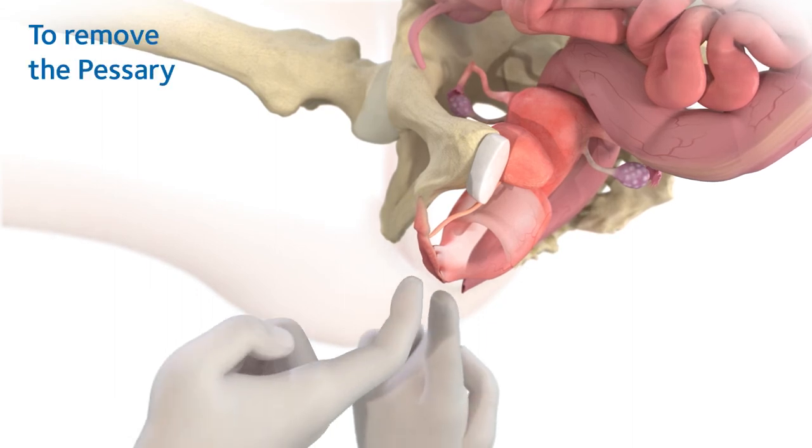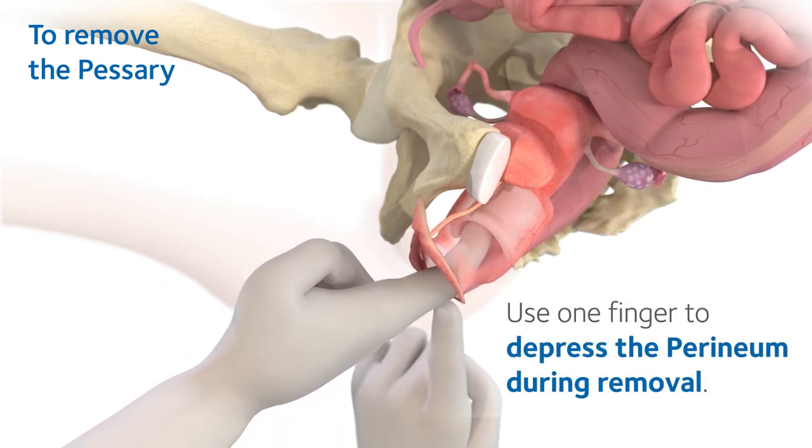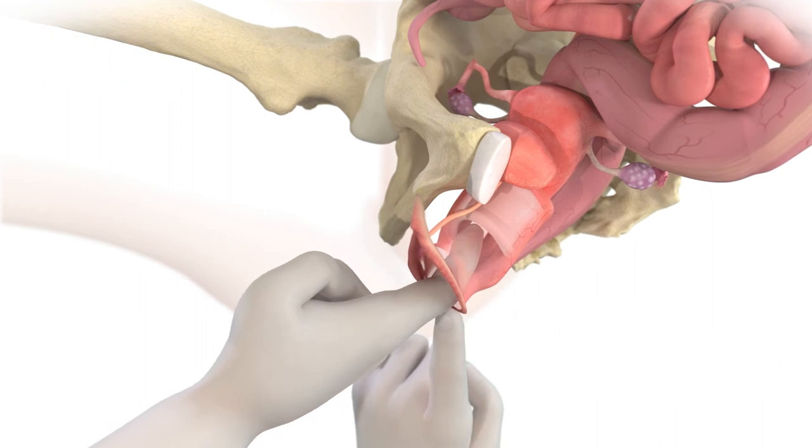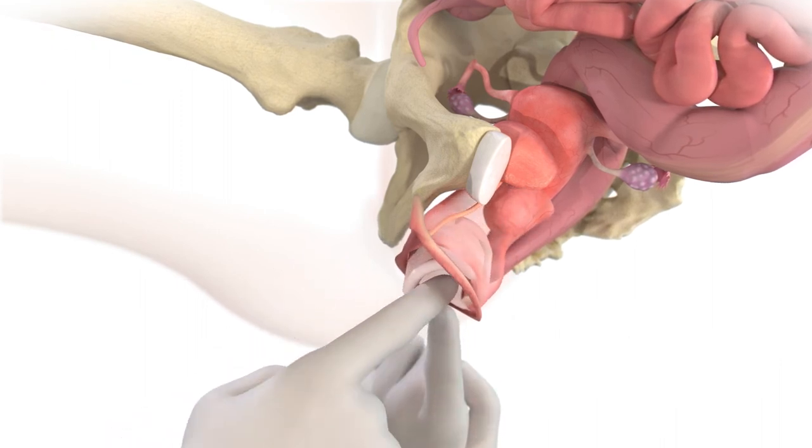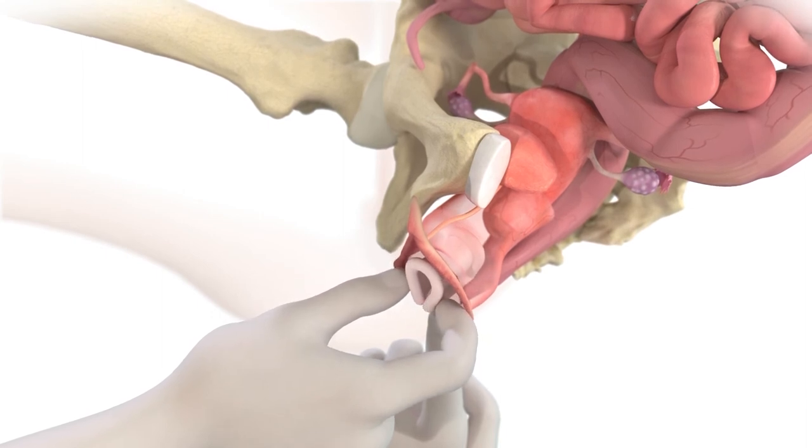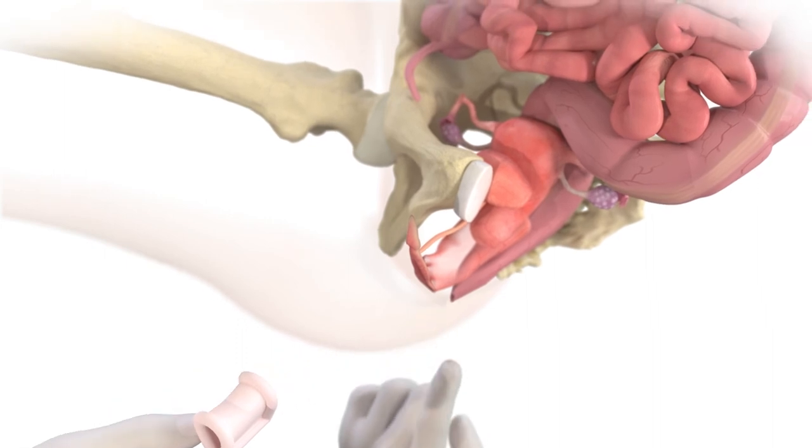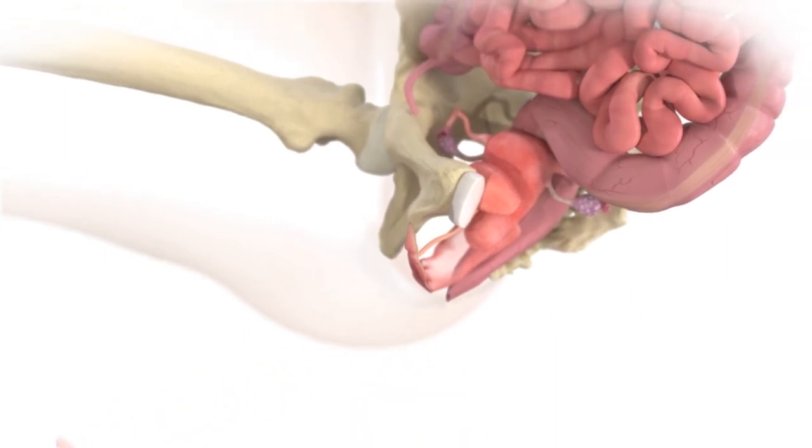To remove the pessary, gradually push back the arch off the cervix while turning the pessary. Pull one heel forward while keeping the other heel back. Fold the pessary with the arch up, gently pulling the pessary one heel first through the introitus, keeping both heels parallel to the pelvic floor.